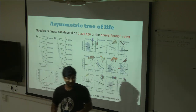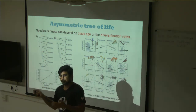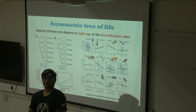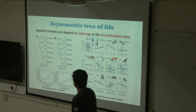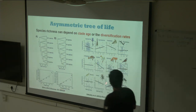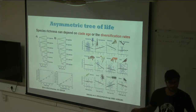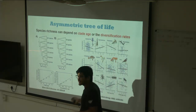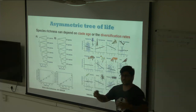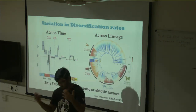There are two main hypotheses to explain such differences in different clades. The clade age hypothesis says species richness is correlated with the age of the clade — older clades would have more species because they've had more time to evolve into different lineages. Another hypothesis says species richness is correlated to diversification rates — that is, the rates at which new species arise and go extinct.